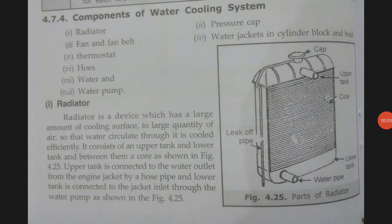In this lecture we will learn about the different components of a water cooling system. A water cooling system is required for any motor or automobile, even the tractors which work on our farms. A water cooling system has the following components: first is the radiator, second is the pressure cap mounted on top of the radiator, third is the fan and fan belt, fourth is water jackets and cylinder block and head, fifth is the thermostat valve, sixth is the hose pipe, and seventh is the water pump.